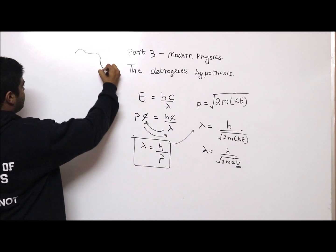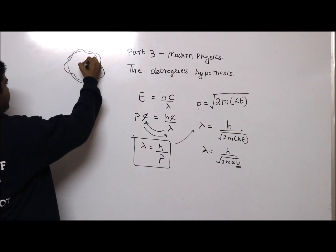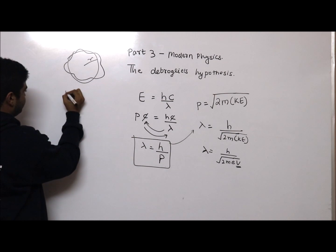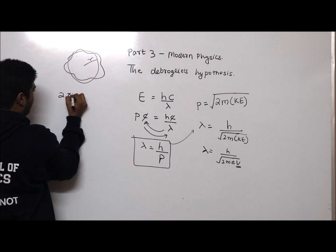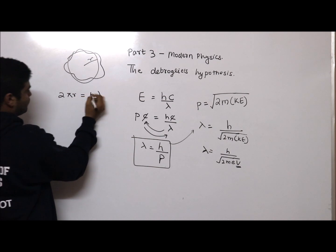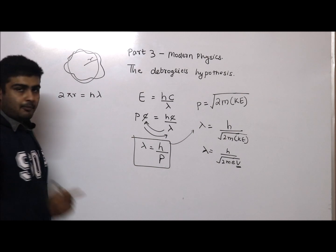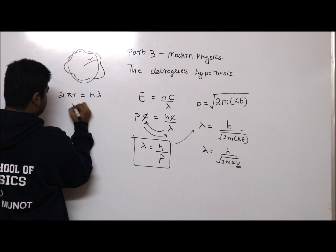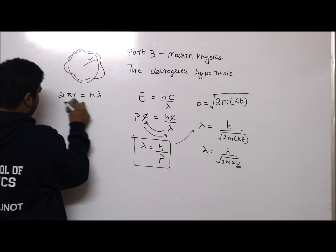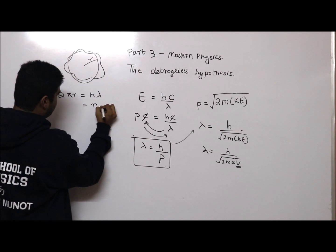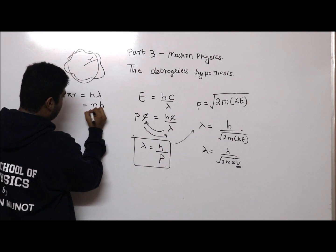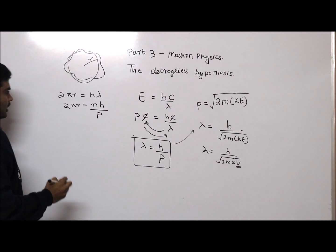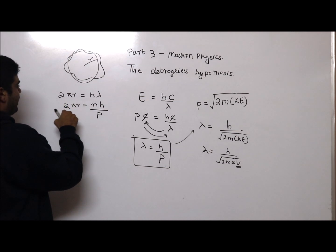Now, what Bohr said is that any orbit is a circular path of radius r. Suppose we say 2πr = nλ, where n is some integer — some multiple of λ. Then λ = 2πr/n. We know h/p = λ, and 2πr = nh/p.